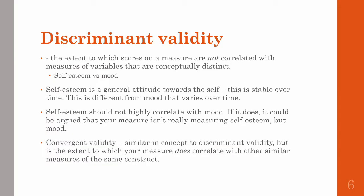The last type of validity is discriminant validity, which is the extent to which scores on a measure are not correlated with other measures that are conceptually distinct. We know that self-esteem and mood are different — self-esteem measures an attitude towards oneself and is pretty stable over time, whereas mood can vary from day to day. So for your measures to have good discriminant validity, your self-esteem score should not correlate well with mood. If it does, the critique could be that your measure doesn't really measure self-esteem, but actually measures mood.